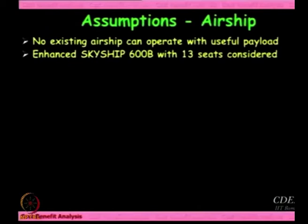Basically we are competing between airship and luxury car because travel by airships will not come cheap — it will be expensive. So who are the people who will take it? People who are hiring a luxury car today for that particular route, and in between we also bring in the SUV or Tata Sumo for common people. As I said, no existing airship can do this route, so we make an assumption that an enhanced version of Skyship 600 with 13 seats. This was done in 2002, and at that point of time we did not have much knowledge about airships and did not know what it would cost to make an airship to meet this requirement, so we had to make some assumptions.